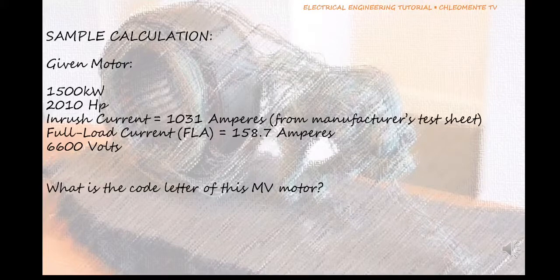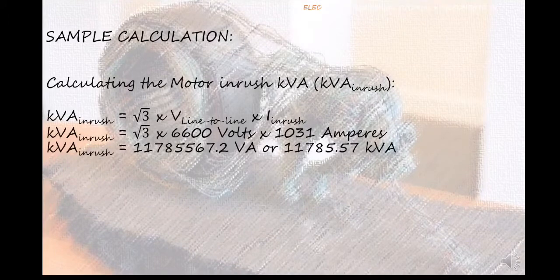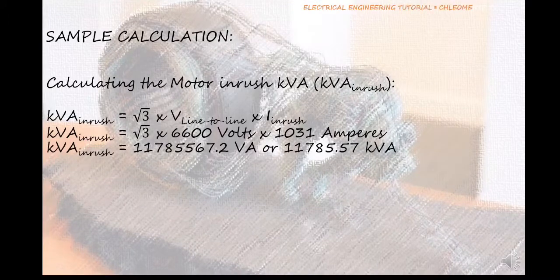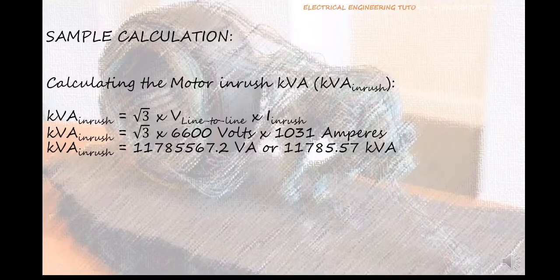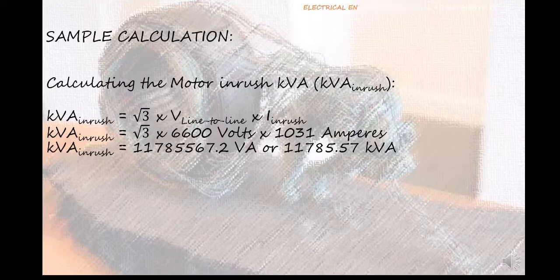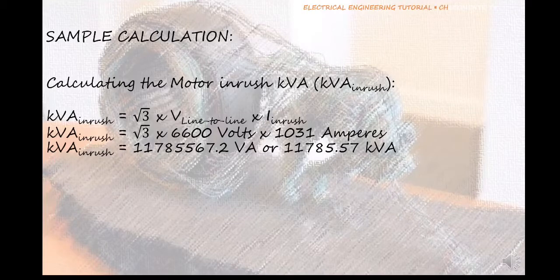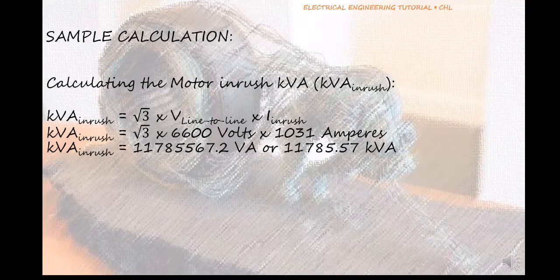So what is the code letter of this MV motor? Now that the needed data is given, we simply substitute the values in the formula we discussed. Applying the formula for calculating the motor inrush kVA, that is square root of 3 multiplied by the line-to-line voltage of 6600 volts multiplied by the inrush current value of 1031 amperes, will yield 11,785,567.2 VA or 11,785.57 kVA.